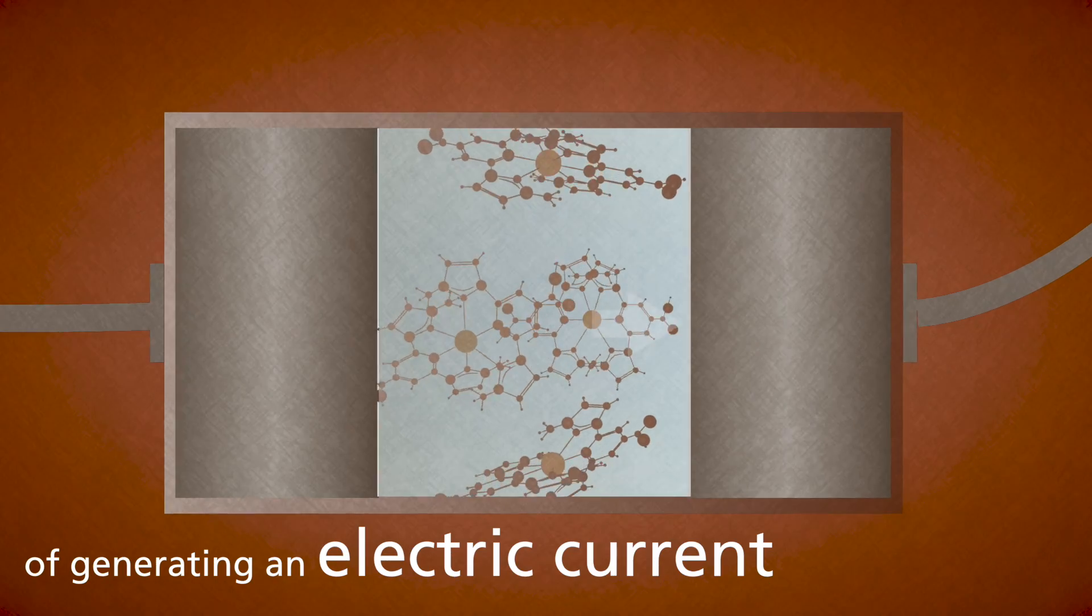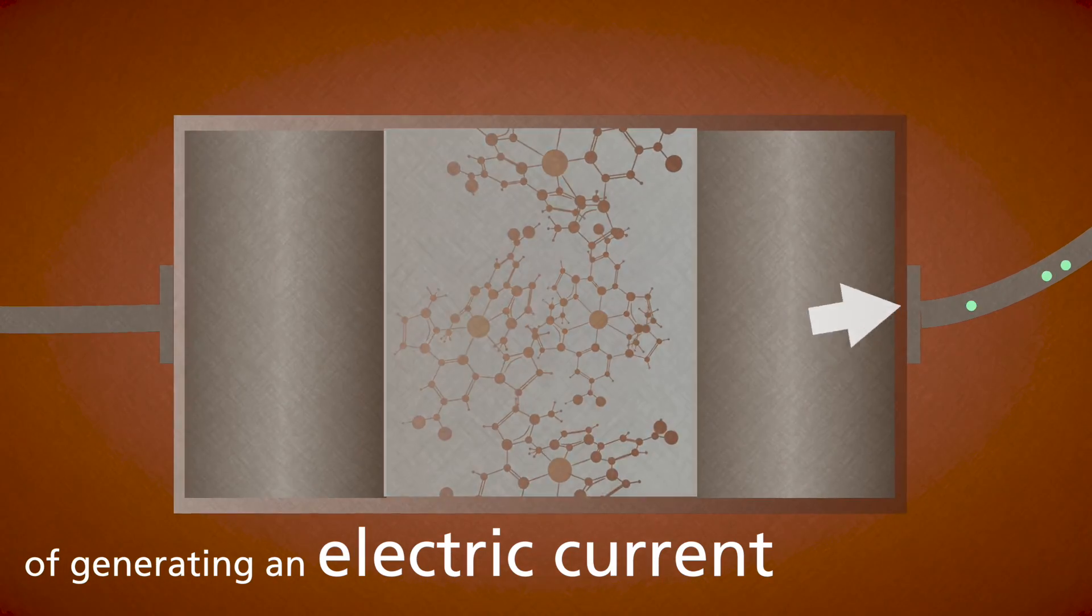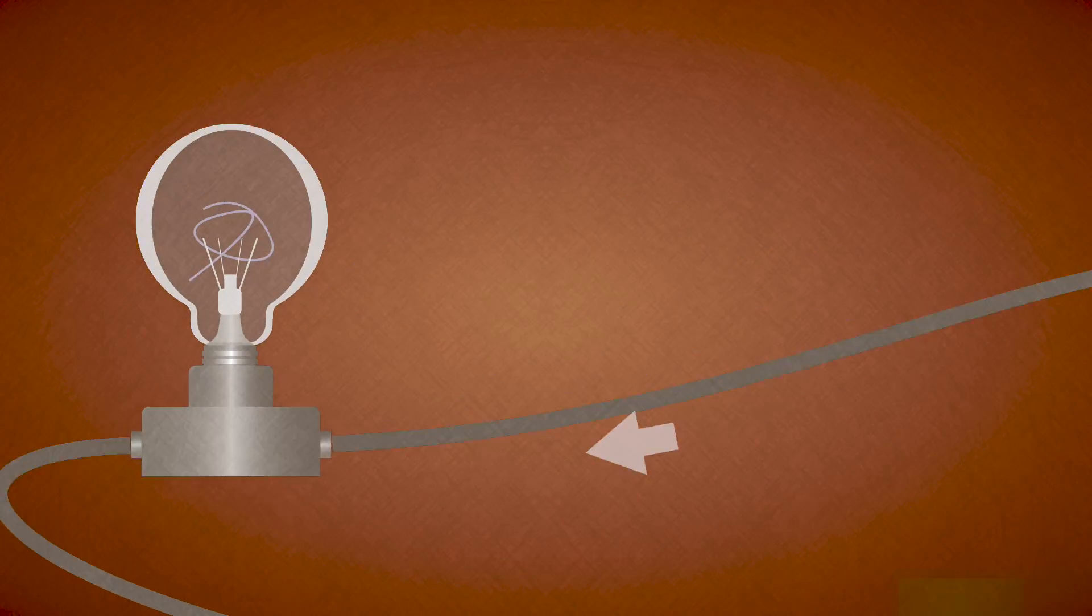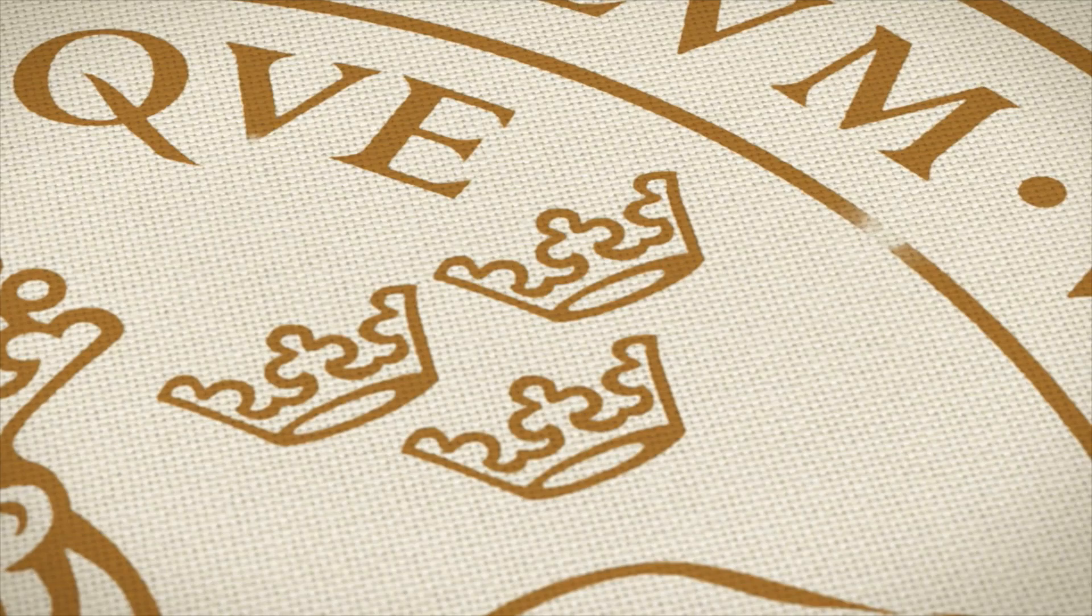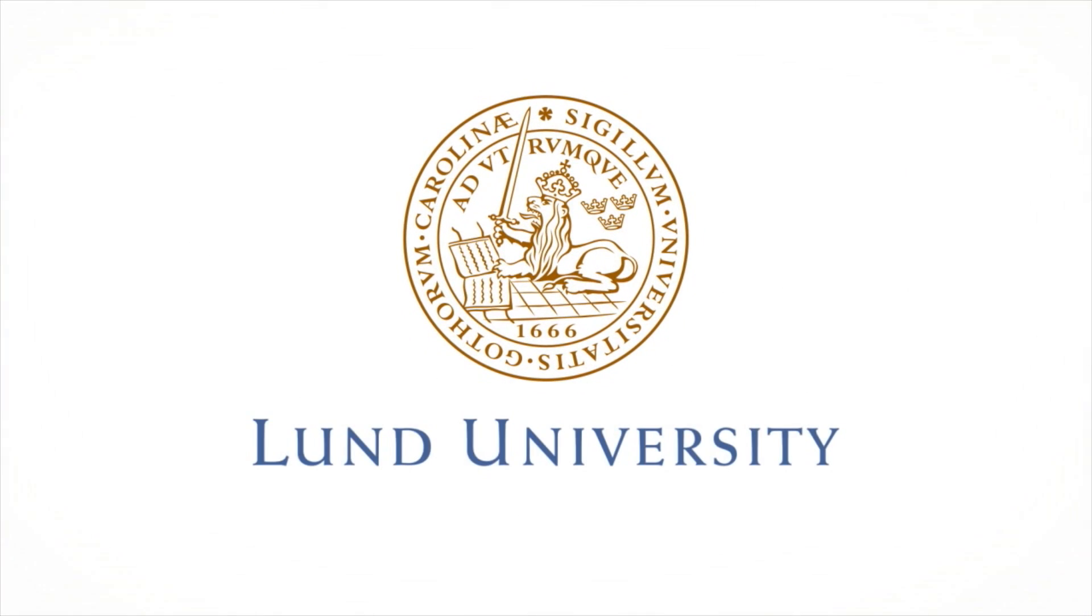This is the first step of generating an electric current. We are very hopeful about our iron solar harvesting dyes. To make this full solar cell requires some more development of these dye molecules. So let's see.